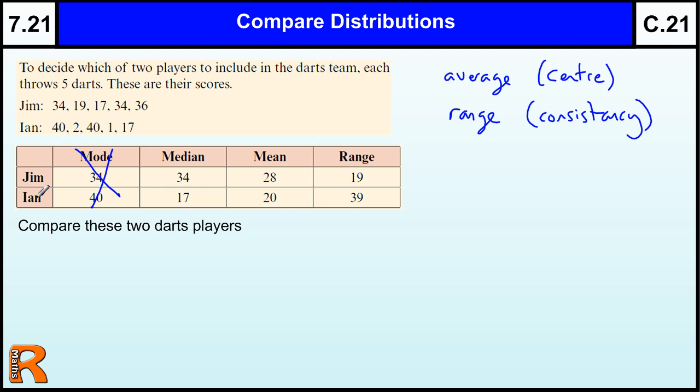So we tend to use either the median or the mean, and from here we can compare the average. The average tells us that Jim is better on average as his mean is higher. So on average he is better because he has a higher mean, so he's going to get a bigger value on average.